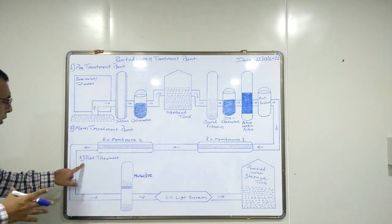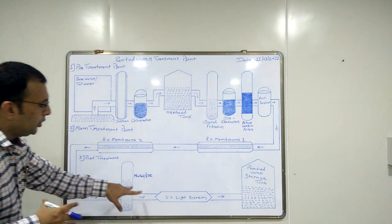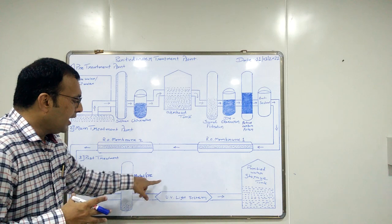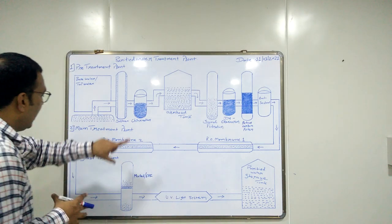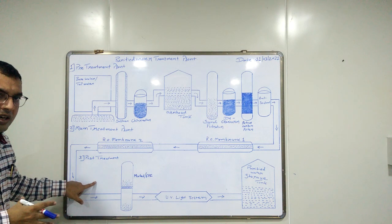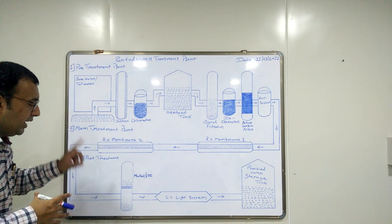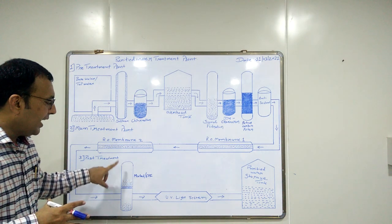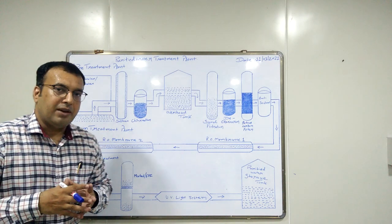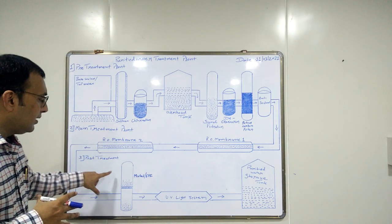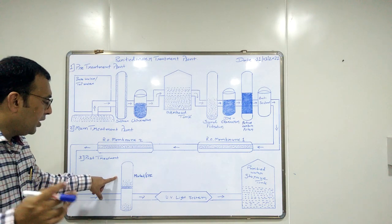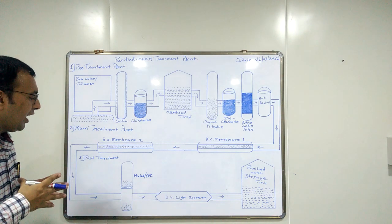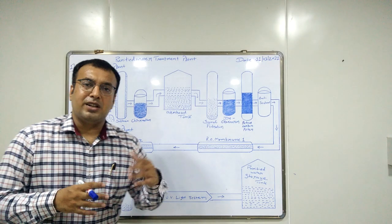Next is the post-treatment. In this post-treatment there are two units: one is mixed bed, also called EDI — electrodeionization — and the next is the UV system. After all the previous treatment, there are still some hydrogen ions and hydroxyl ions present in this water, and these ions are removed by the mixed bed unit. This mixed bed unit also works on an ion exchange procedure, and after some time its effectiveness decreases and it does not work properly. So to increase and maintain its effectiveness, this mixed bed unit must be regenerated as and when required, and I suggest regenerating it periodically.